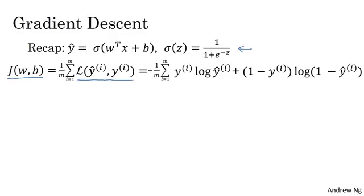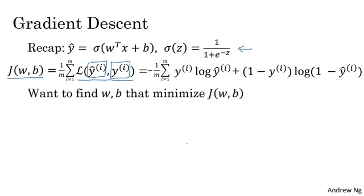The loss function measures how well your algorithm's outputs, y hat i on each of the training examples, compares to the ground truth label y i on each of the training examples. The cost function measures how well your parameters W and B are doing on the training set. So in order to learn a set of parameters W and B, it seems natural that we want to find W and B that make the cost function J of W, B as small as possible.